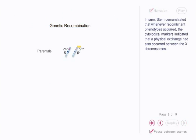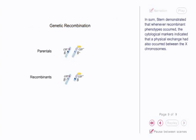In sum, Stern demonstrated that whenever recombinant phenotypes occurred, the cytological markers indicated that a physical exchange had also occurred between the X chromosomes.